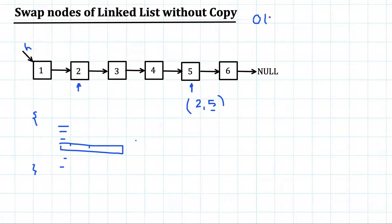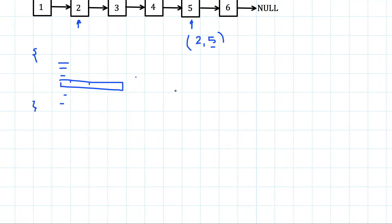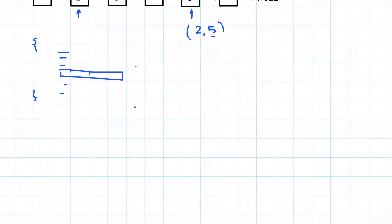Our aim is to do this swap operation in O(1) constant time, and it should not depend on the size of the data. Since we have next pointers, our goal is to just change pointers, which will take constant time.